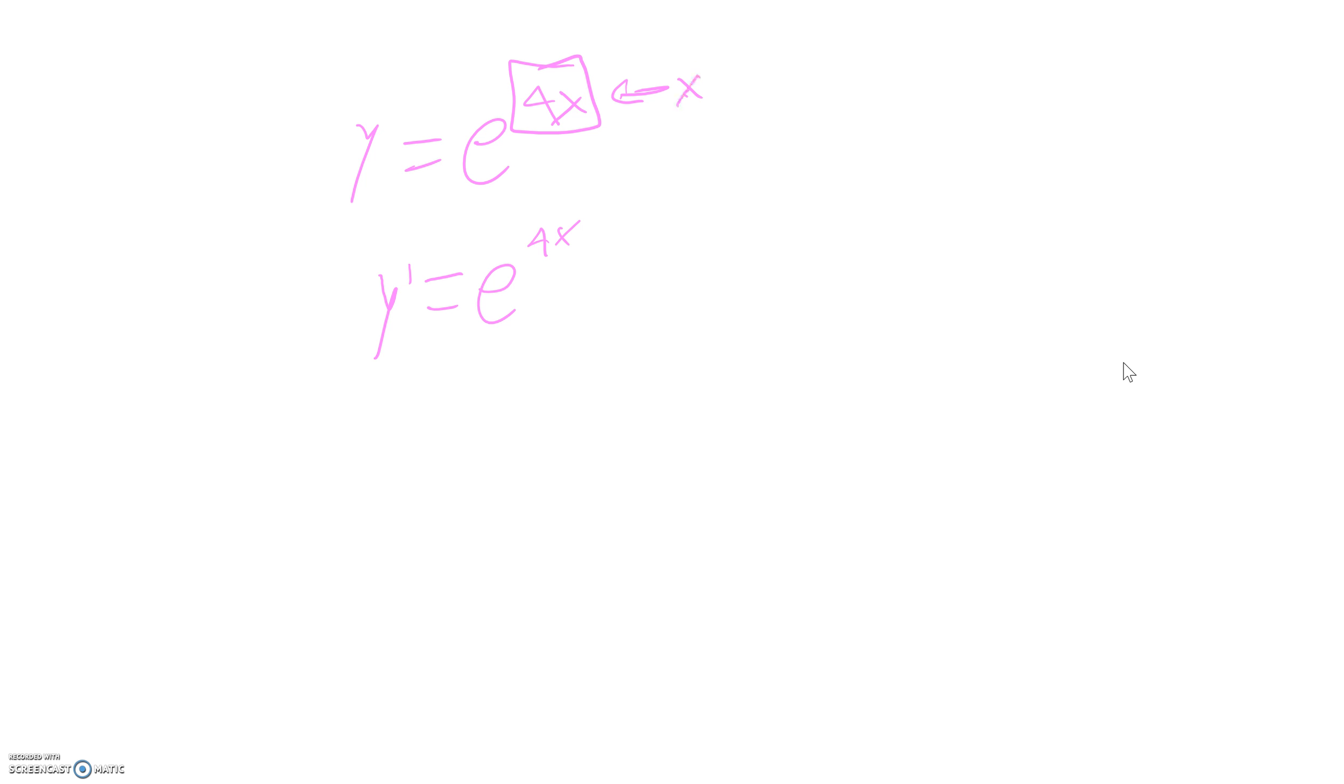And then what you have to do here is you've got to take the derivative of all of this. So, you have to take the derivative of your x, and the derivative of 4x is just 4. So, what we have here is y prime equals 4 times e to the 4x.